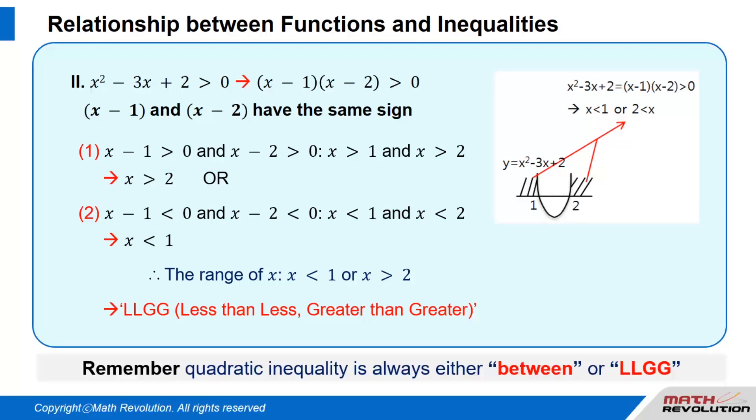Remember that a quadratic inequality is always either 'between' or LLGG (less than less, greater than greater).